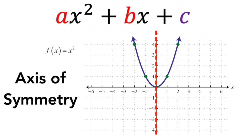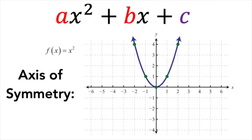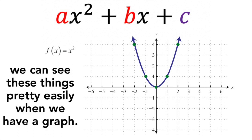So for this quadratic, which is just x squared, the vertex is the origin right there — that's (0, 0). And the equation of the axis of symmetry would be x equals zero. So that's pretty easy to see when we have a graph. I can see the vertex and I can see where that line of symmetry would be.